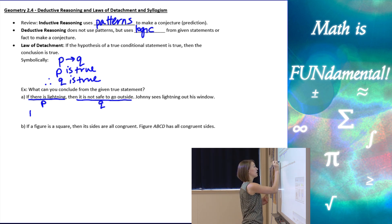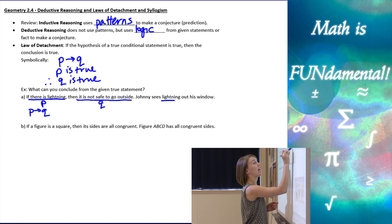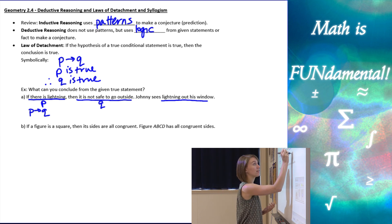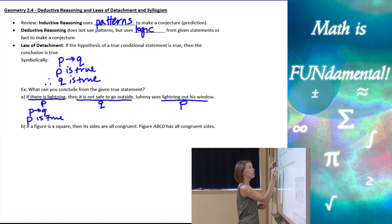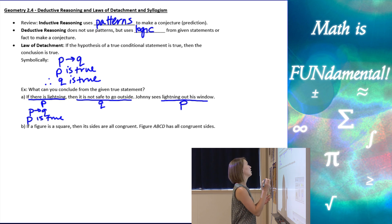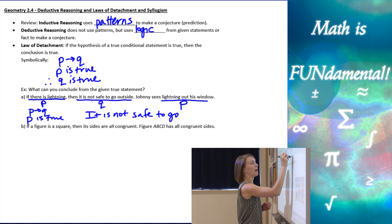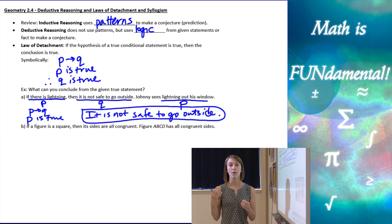Symbolically I have a statement that says P then Q. Now I'm also given another piece of information: Johnny sees lightning out his window. It's not the exact wording as the hypothesis, but it's the same information — the hypothesis is 'there is lightning,' Johnny sees lightning, so there is lightning. That counts as saying P is true. So I know P then Q, and P is true, so I can conclude Q. I just want to conclude the conclusion: it is not safe to go outside. That's my answer.